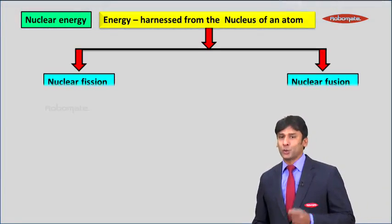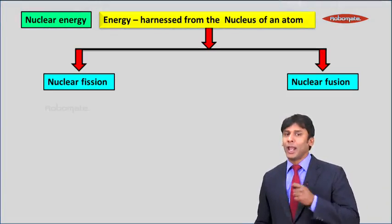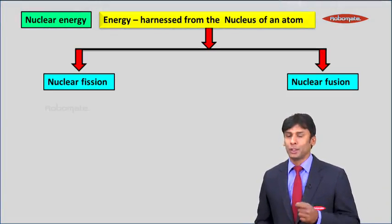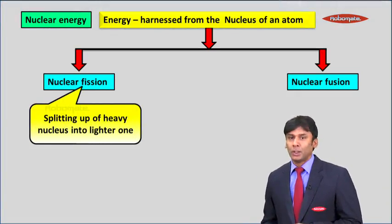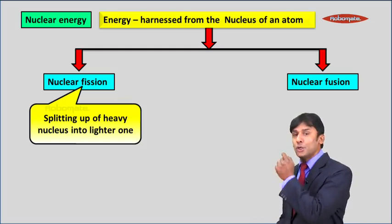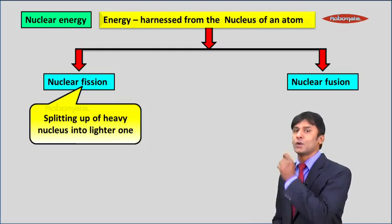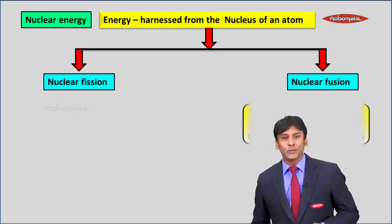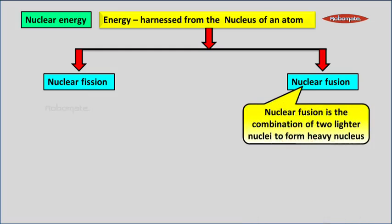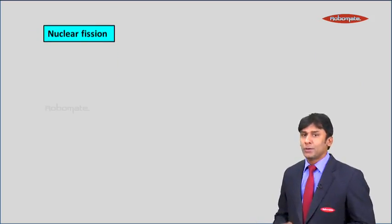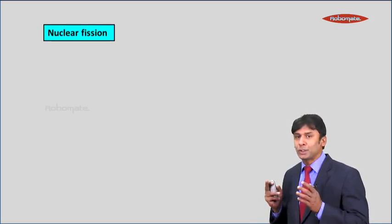This can be harnessed in two ways. The first one is nuclear fission and the second one is nuclear fusion. Now what is nuclear fission? Splitting up of heavy nucleus into lighter one is called nuclear fission. And what is fusion? Nuclear fusion is the combination of two lighter nuclei to form heavy nucleus. So in short, fission is splitting and fusion is combination.